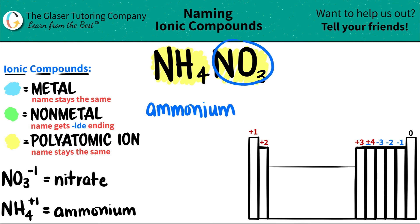And then the NO3 comes next. NO3 is nitrate. Name doesn't change. So you're done. Look at that. NH4NO3 is just ammonium nitrate. There you go.